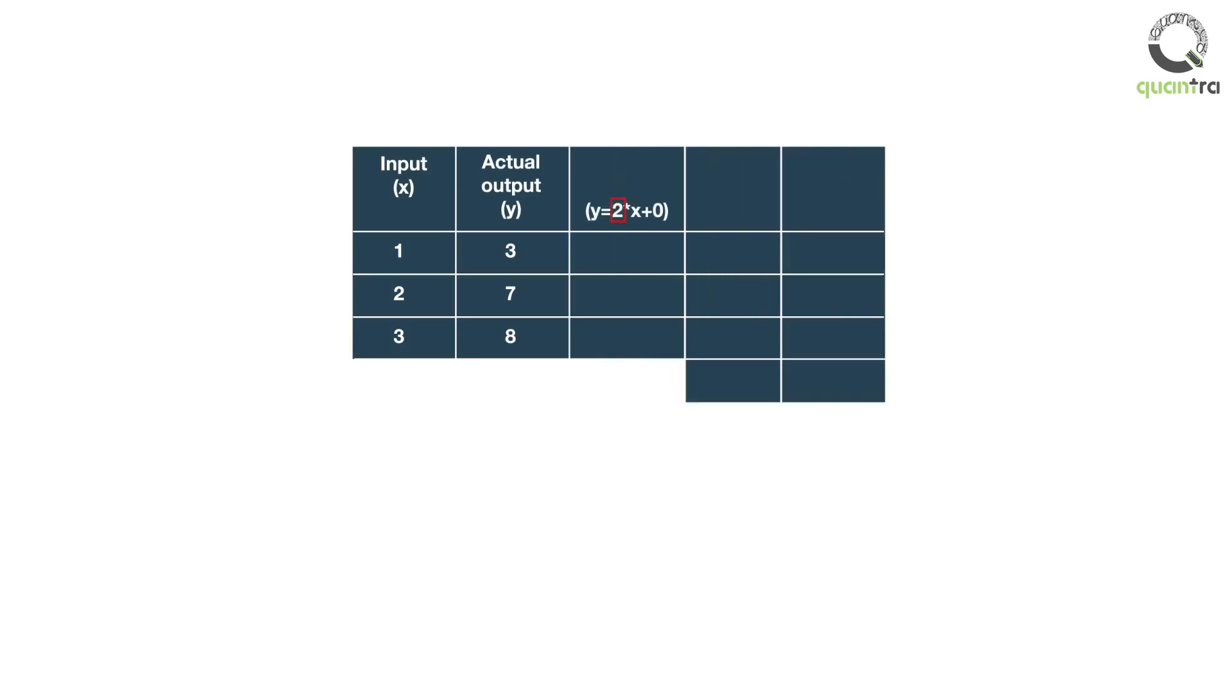A function with weight as 2 and bias as 0 is used to predict the output y from input x. The predicted output is 2, 4, and 6.